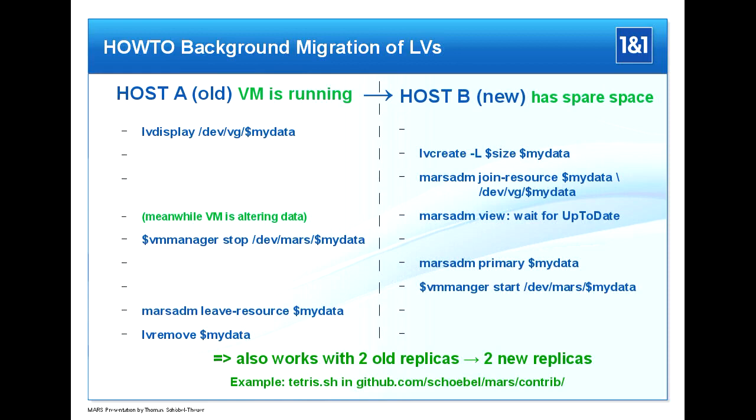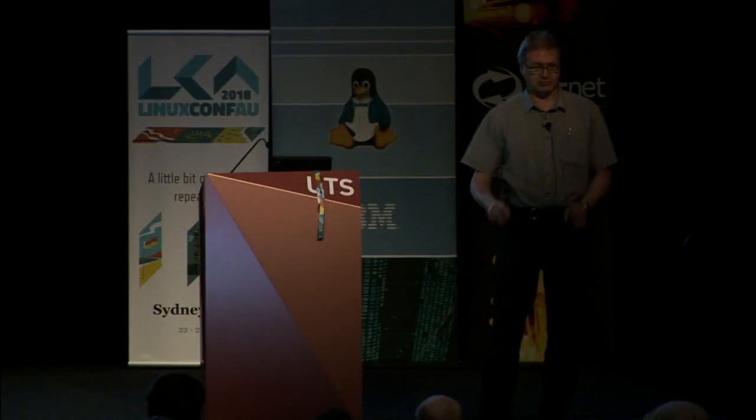Let's look at the method for background migration via MARS. The precondition is we have host A where some VM is running all the time — we need to minimize downtime. Host B has spare space and is already a member of the same MARS cluster. MARS clusters have operations like joining or merging a cluster. You create a new logical volume at LVM level with the same size as the existing copy, then issue one command: mars-rdm join-resource, specifying the resource name and the freshly created logical volume.